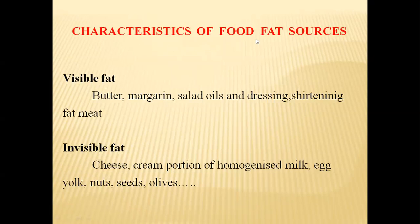Characteristics of food fat sources — visible fats include butter, margarine, colored oils, dressing, and fat on meat. Some invisible fat materials include cheese, cream portion of homogenized milk, egg yolk, nuts, seeds, and olives. These foods contain invisible fat.